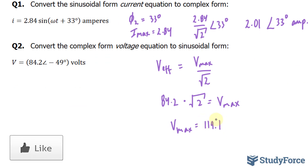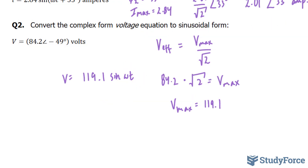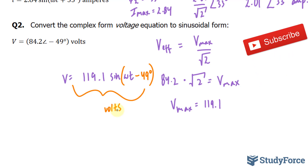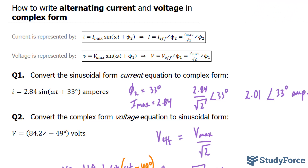I'm going to substitute this now into V is equal to 119.1 sine of omega t, and our angle is negative 49 degrees. So the phase angle for this equation will be negative 49 degrees. This has the units of volts. And there you have it — two examples on how to write alternating current and voltage in complex form and vice versa.